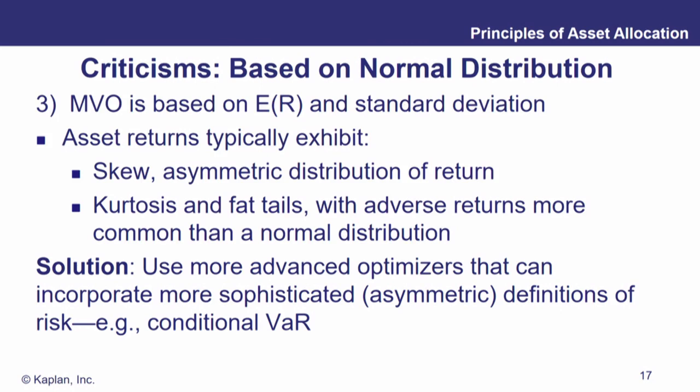Fatter tails mean we have more extreme positive and negative events than the assumption of normality would suggest. This means we would be surprised every time we had a market crisis, thinking it should only happen once every 500 years when in reality it happens once every 30 or 40 years. If we underestimate kurtosis, we're underestimating adverse negative returns. To solve this, we can use a more advanced optimizer that incorporates more sophisticated definitions of risk — capturing the effect of skew and kurtosis — such as value at risk, to figure out what's worst-case and lead us to more realistic portfolio allocations.